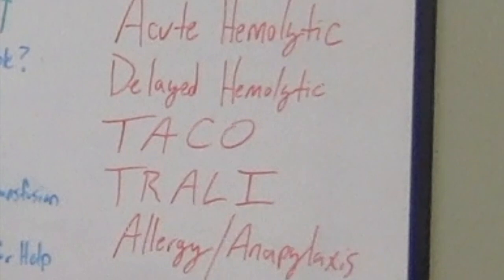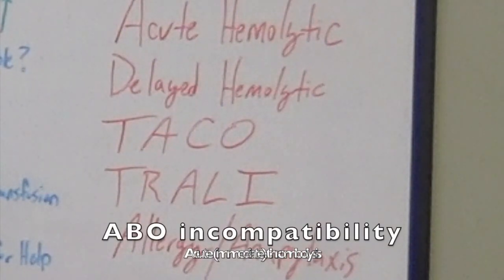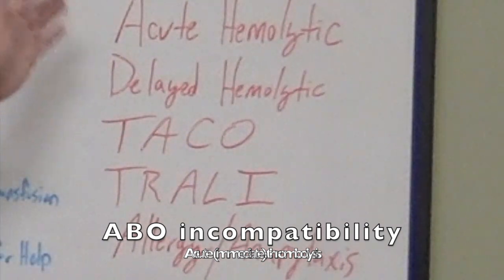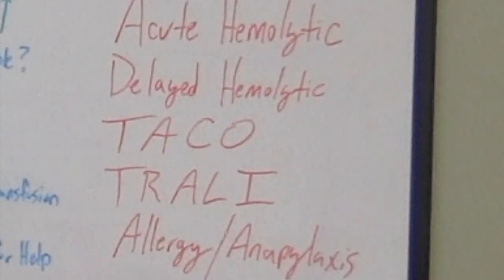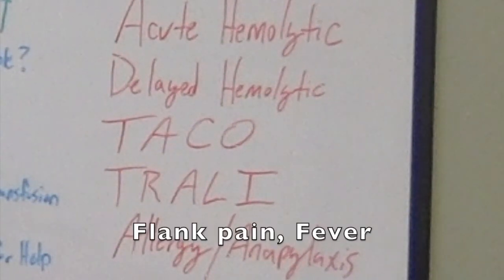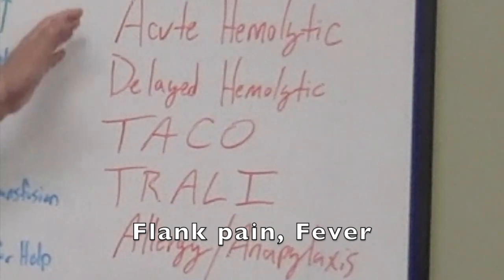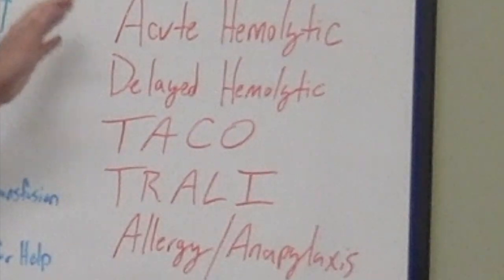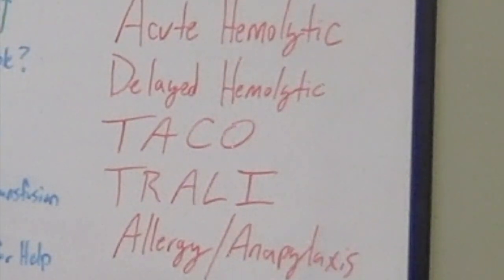Acute hemolytic reactions occur typically when the patient receives the wrong type of blood product. This is very rare. When there's an ABO incompatibility, this will happen very acutely, almost instantaneously. The patient is going to feel flank pain, feel feverish, and they're not going to feel well. I want to evaluate the hemolysis going on in these patients. But again, this is pretty rare given the electronic systems that are in place to prevent patients from receiving the wrong blood products.